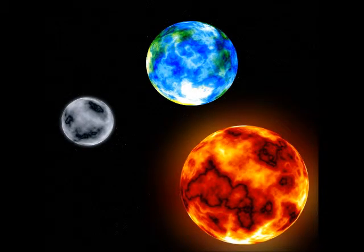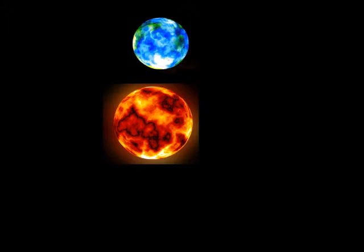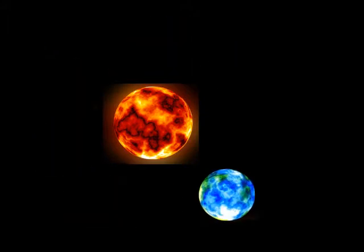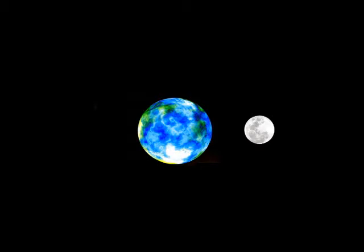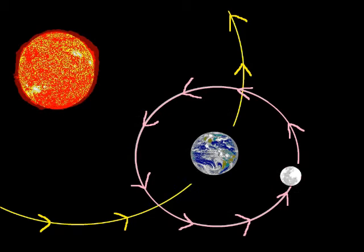But what causes these phases? Why do we see different shaped moons in the sky? Well, the answers to these questions have to do with the Earth, Moon, and Sun and their movement and positioning in relation to one another at different points in time. The Earth orbits the Sun, and while it's doing this, the Moon simultaneously is orbiting the Earth. It takes approximately 29 and a half days for the Moon to orbit the Earth and complete a full cycle of phases.